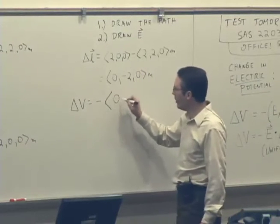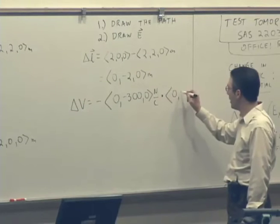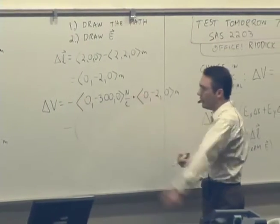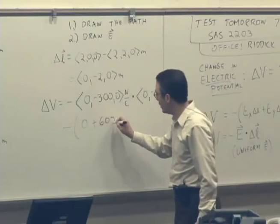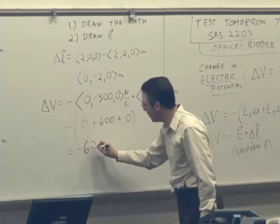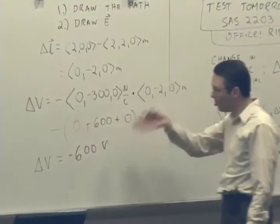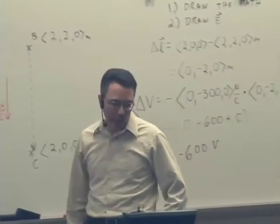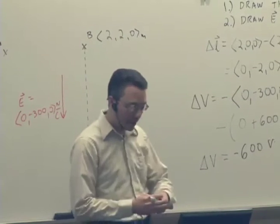We have an electric field (0, −300, 0) newtons per coulomb dotted with (0, −2, 0) meters. So I have a negative multiplying: 0 times 0 gives 0, plus negative 300 times negative 2 gives 600, plus 0. But I have this negative sign up front, so this is negative 600 volts. The abbreviation for volts is V, which looks like the same symbol as the quantity, but we'll just have to deal with it. So it's negative — negative 600 volts is correct.